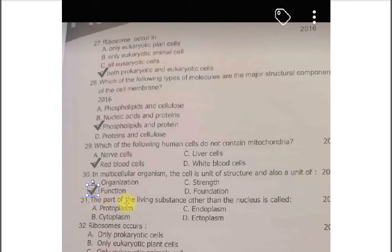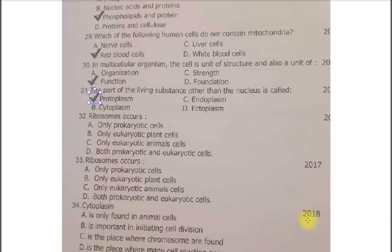Next question. The part of the living substance other than the nucleus is called A. Protoplasm, B. Cytoplasm, C. Endoplasm, D. Ectoplasm. The correct answer is the A. Protoplasm. Next question.